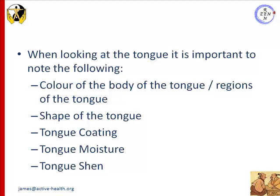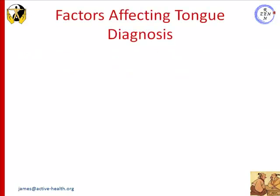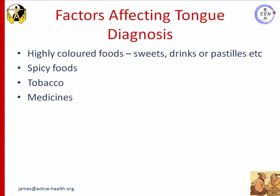When looking at the tongue, it's important to note the following: first, we note the color of the body of the tongue and the regions; next, we note the shape of the tongue; then we note the coating; then we note the tongue moisture — whether it's moist or dry; and then we look at whether the tongue has shen, as we've discussed in class.